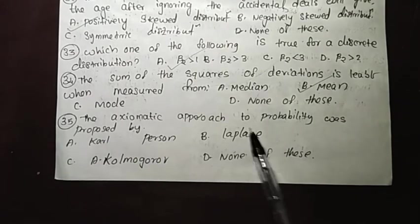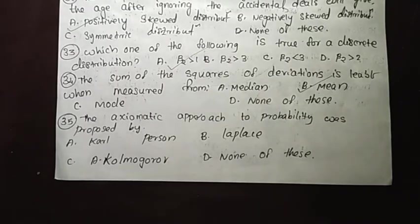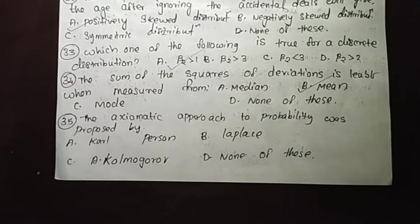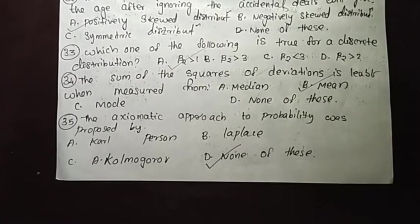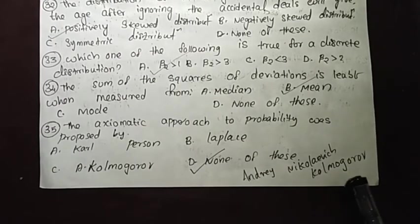The axiomatic approach to probability was proposed by Kolmogorov. Option is the answer.